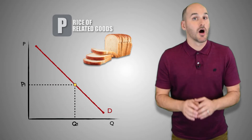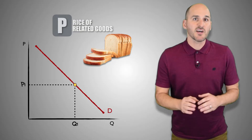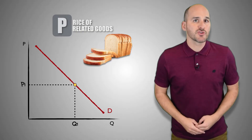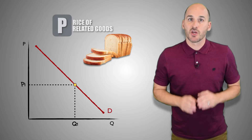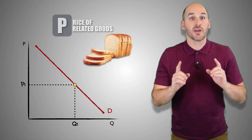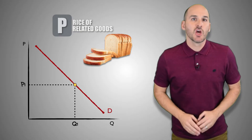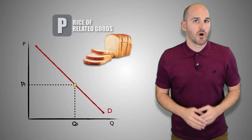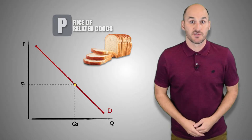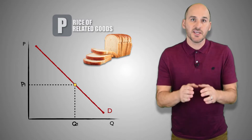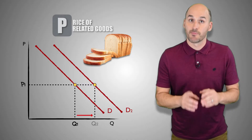Now suppose the price of butter, a complementary good to bread, decreases. Because bread and butter are complements, consumers usually buy one when they buy the other. If the price of butter decreases, consumers will buy greater quantities of butter. Then, after buying more butter at a cheaper price, consumers will choose to buy greater quantities of bread at every price level to use with the butter they've already purchased. So a decrease in the price of a complementary good will cause an increase in the demand for a good.